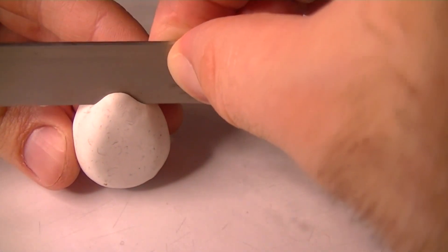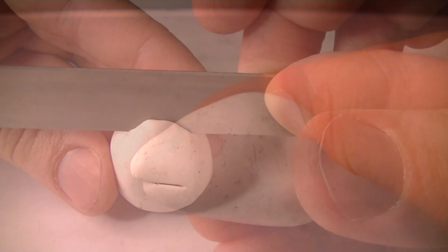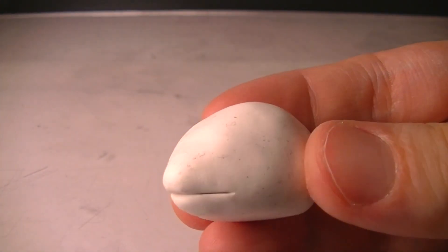Now we're going to be making his mouth, which is going to be super simple. I'm just going to take this blade that I normally use to cut clay and just press it in.